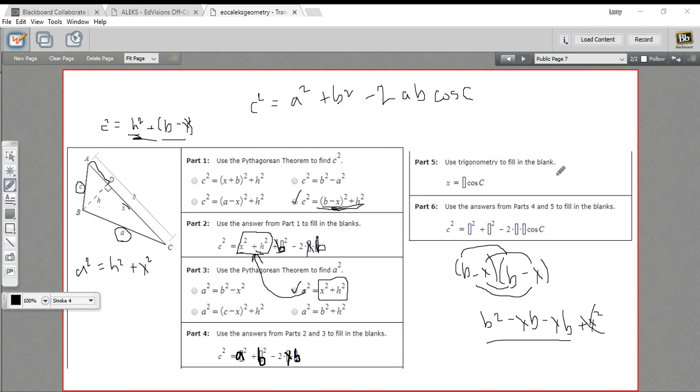Step five says, use trigonometry to fill in the blank. Like x equals something times the cosine of c. Well, let's look at angle c. What would the cosine of c be? Cosine is adjacent over hypotenuse. So it would be x over a. So the cosine of c equals x over a. And then it looks like they just solved that for x by multiplying both sides by a. So here they would cancel. I would get x equals a times the cosine of c. So what we fill in here is just a.